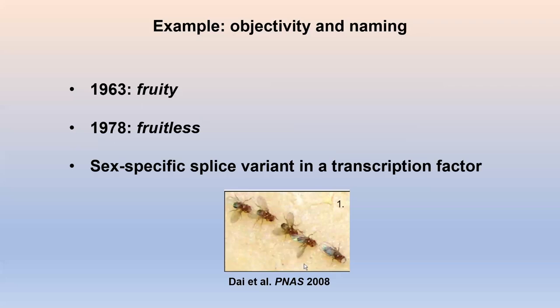Neither of these names — 'Fruity' nor 'fruitless' — is particularly useful if we're trying to talk about scientific accuracy. What does this gene actually do? It's a sex-specific splice variant in a transcription factor: a gene that binds with DNA and causes the expression of other genes. Which form is present depends on whether you're male or female. If you have the male variant, you do male things; if you have the female variant, you do female things. You can see there's still plenty of cultural information tied up in this, like the concept of maleness and femaleness — but we're getting closer.